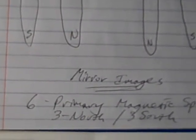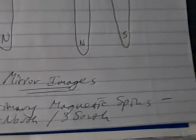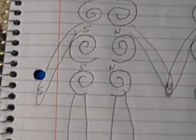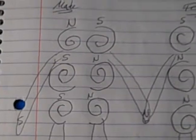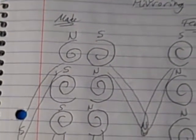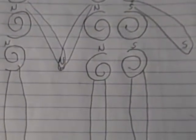The magnetic spin structures of human beings, from what I can gather at this point, are based on six primary magnetic spins: three north and three south. Here you have the female basic magnetic spin structure and the male basic magnetic spin structure. The top two magnetic spins are the head, the next two are the chest, and then the final two are the pelvic region.